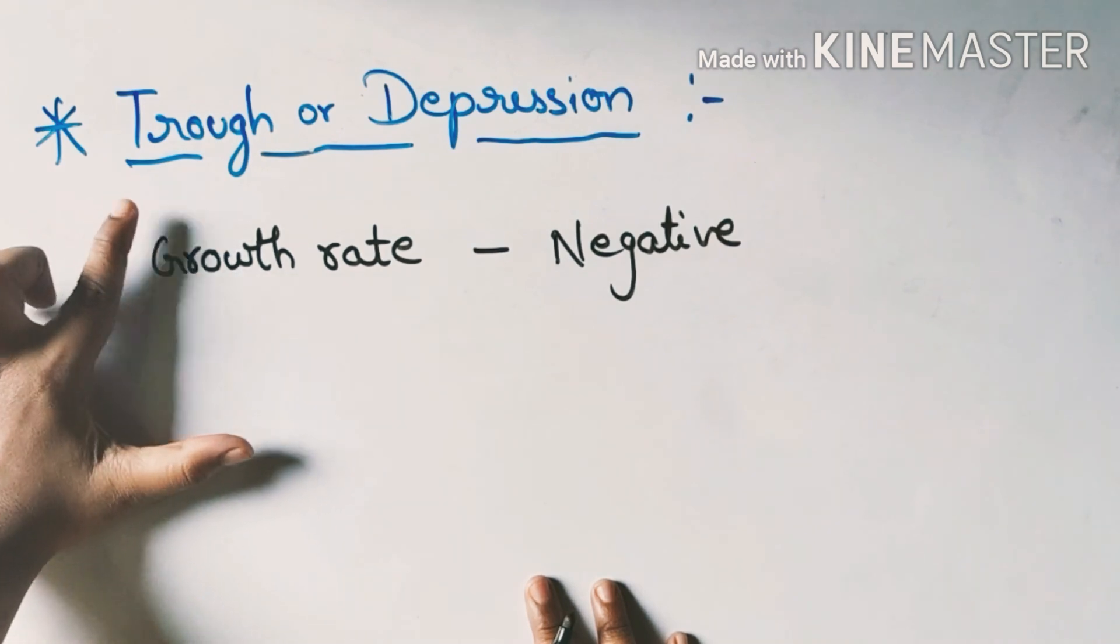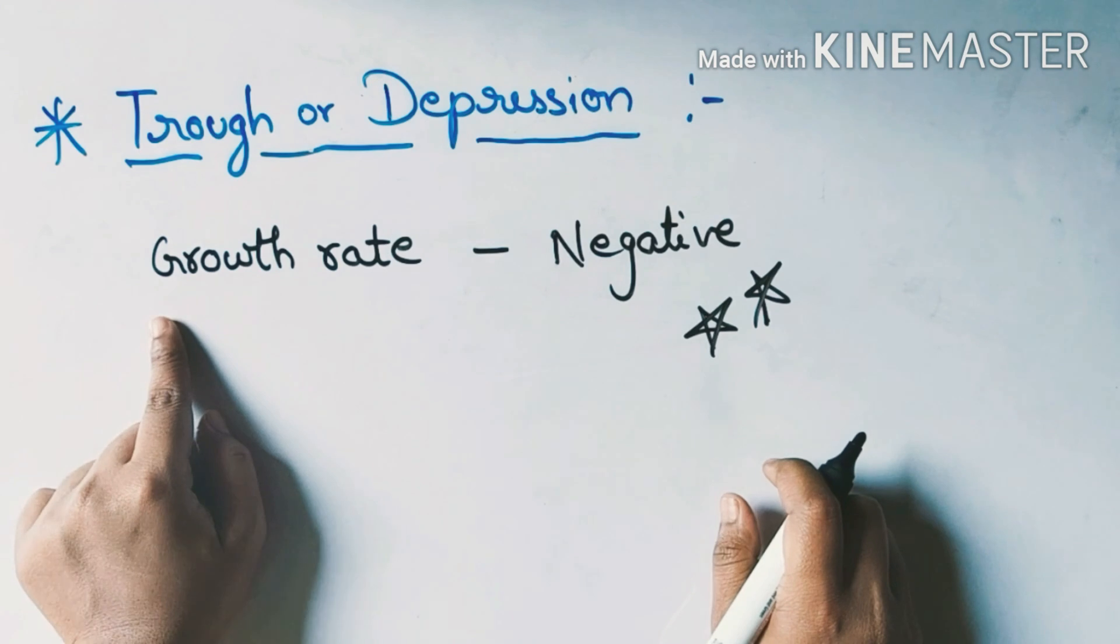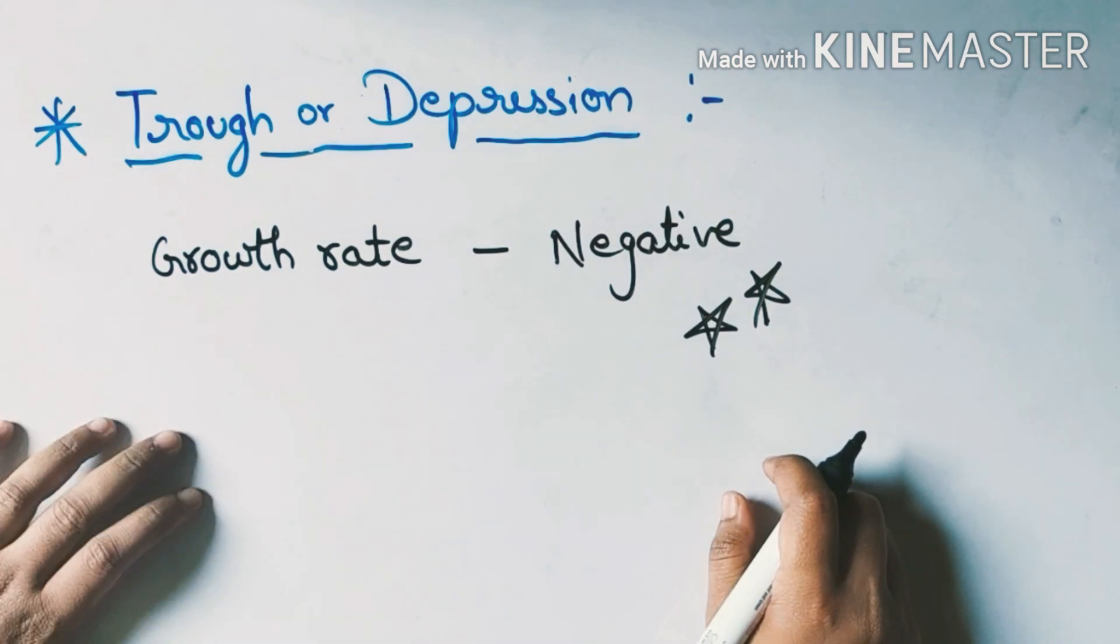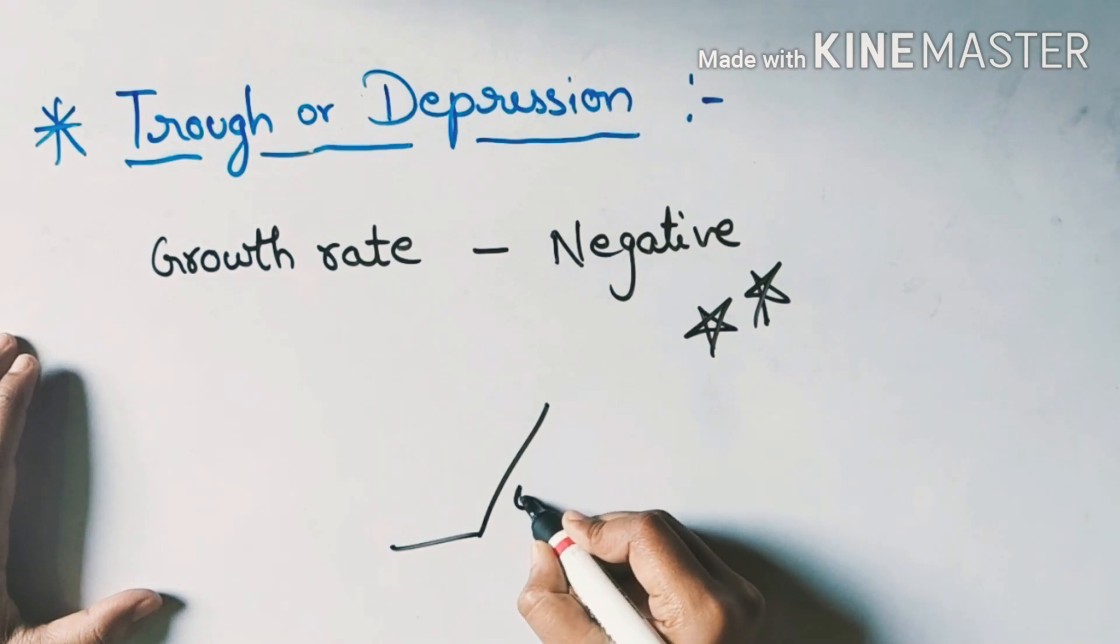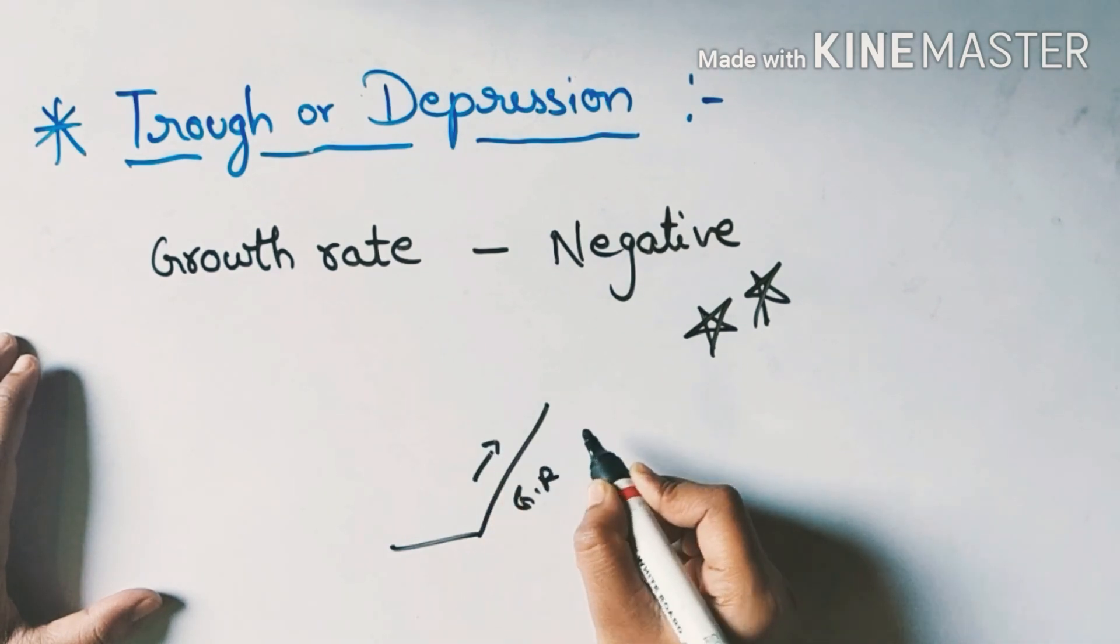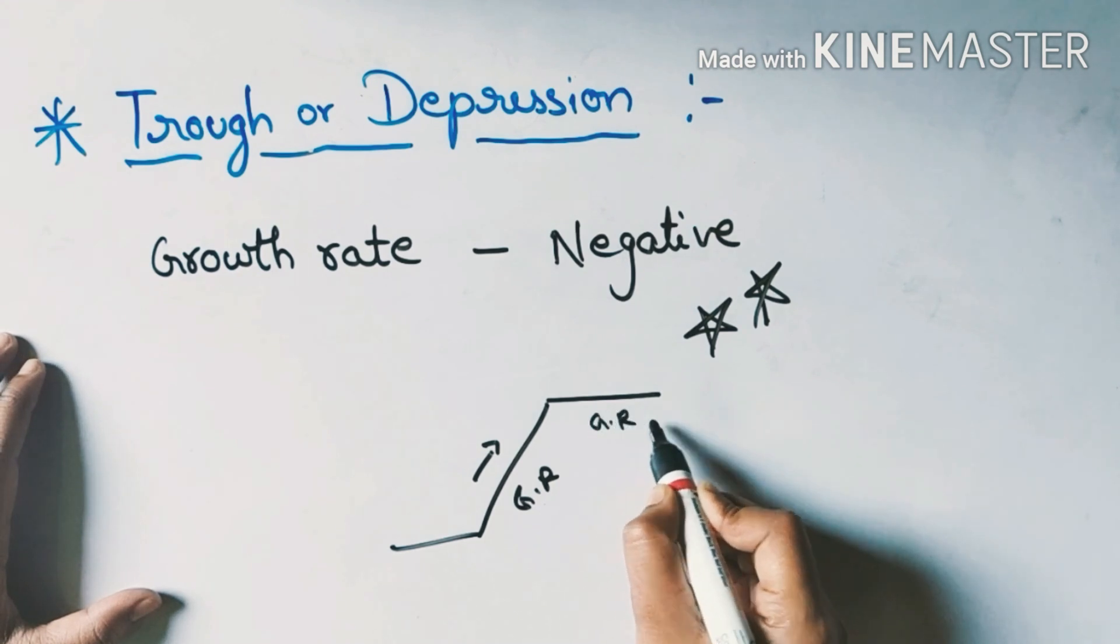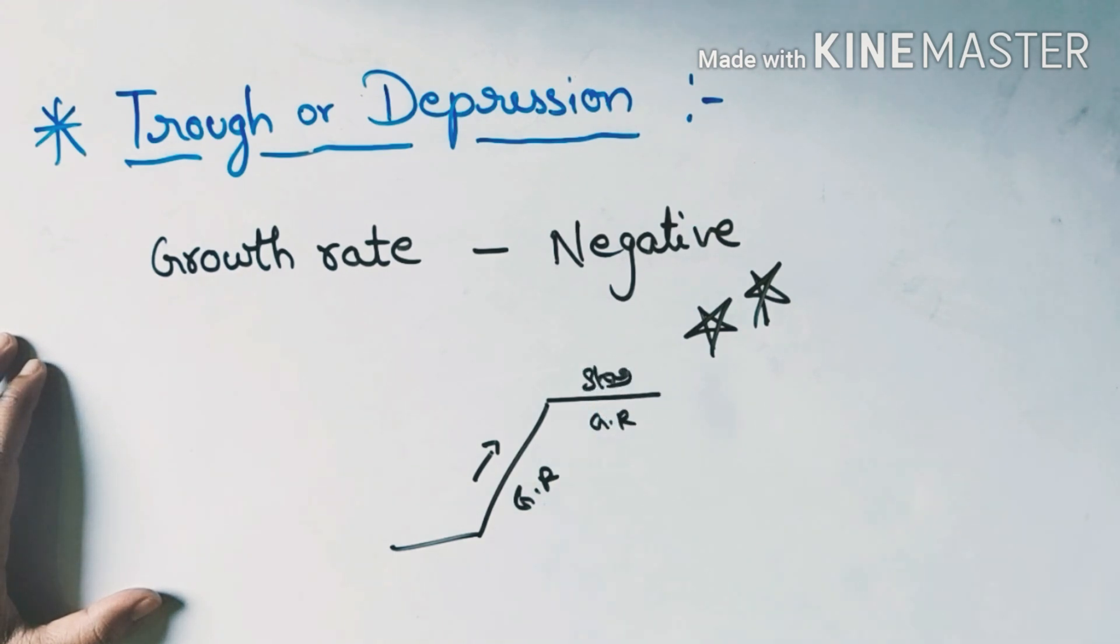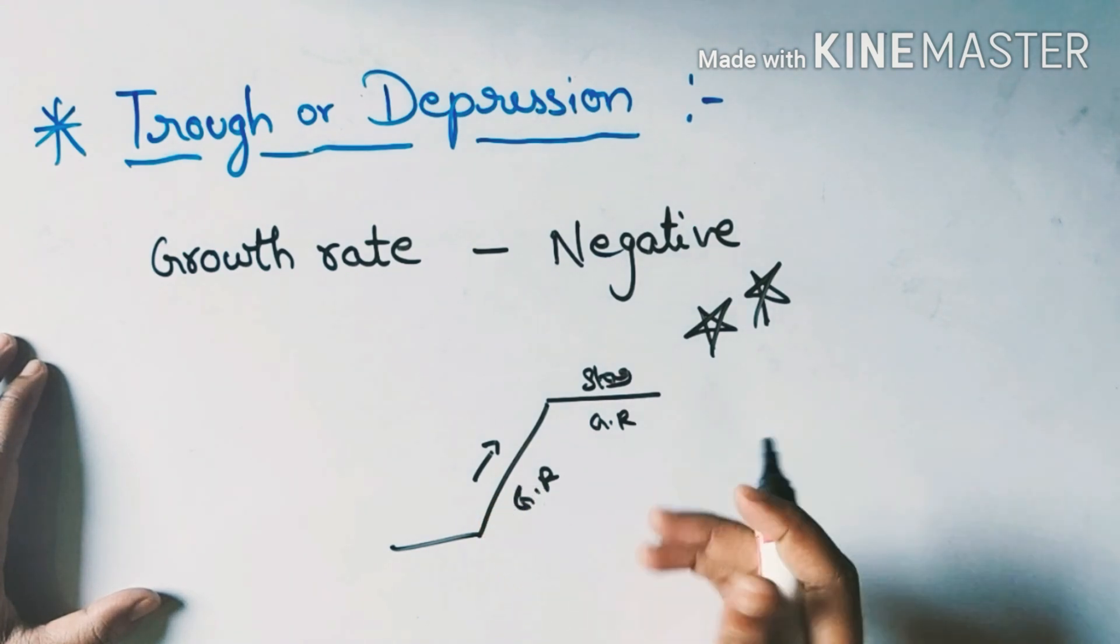The main characteristic of trough is this: what is the growth rate? It is negative. Now we have the growth rate in the expansion phase - the growth rate is increasing. And at the peak, the growth rate is stagnant.